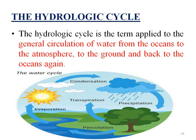This is the hydrologic cycle — a term applied to the general circulation of water from the oceans to the atmosphere, to the ground, and back to the ocean again. This describes the general circulation of water: from ocean, to atmosphere, to ground, and back to rainfall in the ocean.